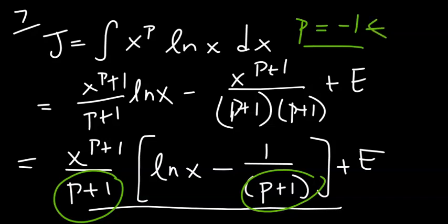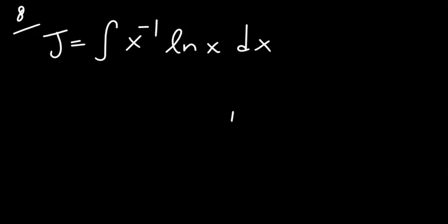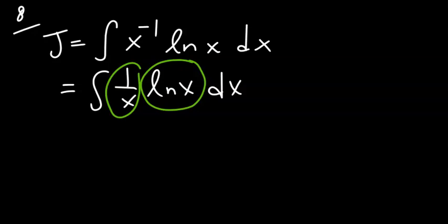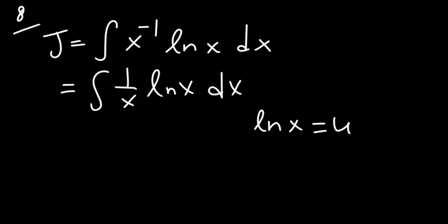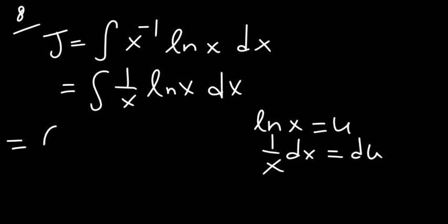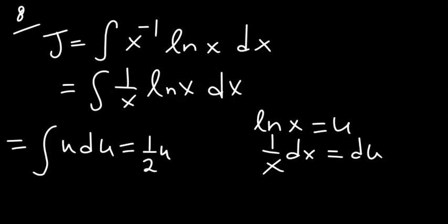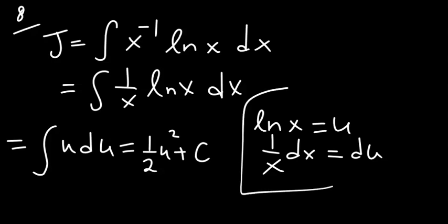When p equals minus 1, the integral becomes the integral of ln(x)/x dx. Since we have 1/x and ln(x) together, we set u equal to natural log of x, so 1 over x dx is the differential of u. Rewriting the integral in terms of u gives the integral of u du, which equals u squared over 2 plus a constant c. Substituting back, the final answer is (1/2)(ln(x))² plus c.